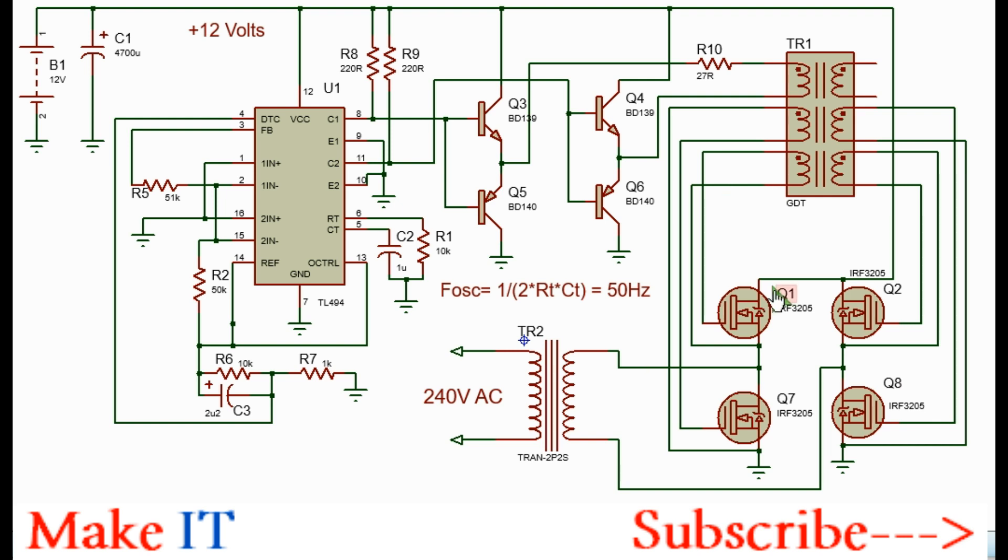What will happen is when Q1 and Q8 conducts, voltage and current will flow from the 12 volts rail as shown here through Q1, through the primary winding of the transformer, through Q8, and to ground.